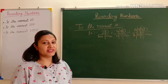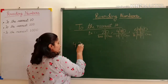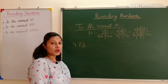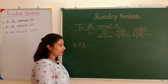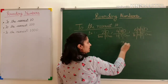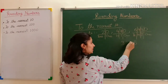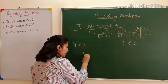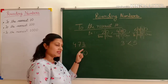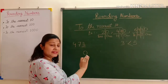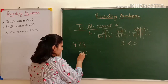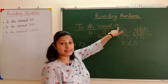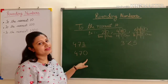Let's take a three-digit number: 473. Again, I will compare the ones place digit with 5. Here the ones digit is 3; 3 is smaller than 5. In this case, I will place zero in place of 3 and will not add anything to the tens place — I write all other digits as they are. So when I round off 473 to the nearest ten, the number is 470.